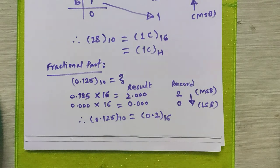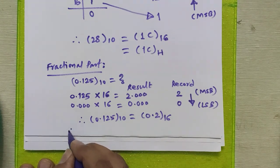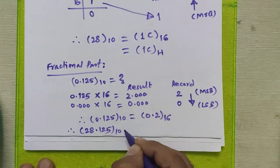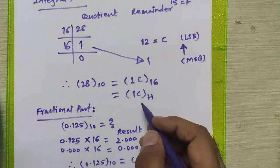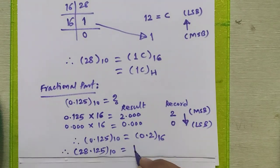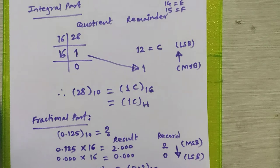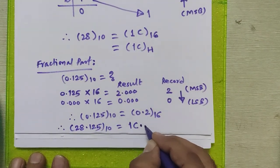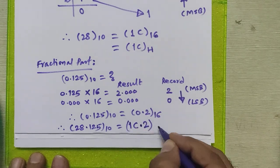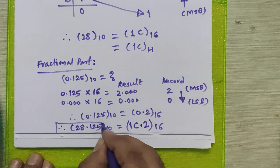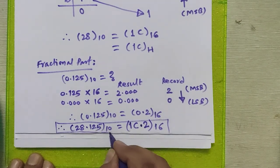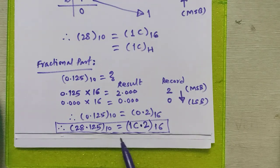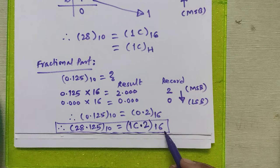To get the actual result of our problem, we need to combine both parts. 28.125 decimal is equivalent to 1C point 2 hexadecimal. This is our actual answer: 28.125 decimal equals 1C.2 hexadecimal.